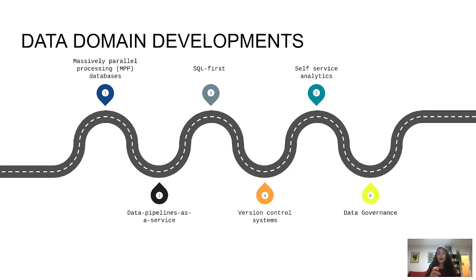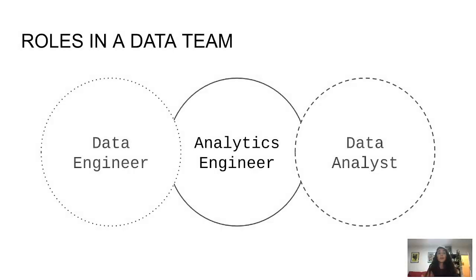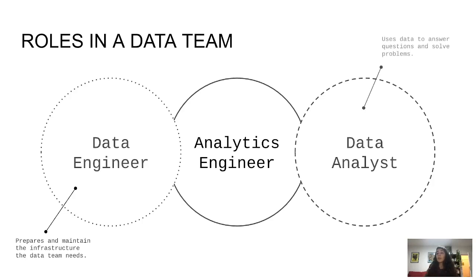This left a gap in the roles within the data team. In a traditional data team, we recognize the data engineer, the data analyst, and also the data scientist. The data engineer prepares and maintains the infrastructure the data team needs, while the data analyst uses that data to answer questions and solve problems.